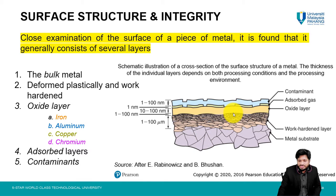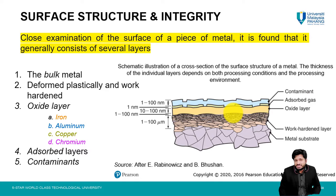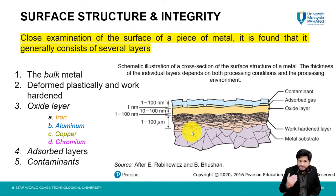Upon close examination, you will find different important layers present in a material. Number one is the bulk material, also called metal or substrate, which has a structure that depends on the composition and processing history. For instance, if the metal substrate was cast, you may see equiaxed grains or directionally solidified dendrite structures. If it was manufactured by deformation or forging, the grain structure will be different.